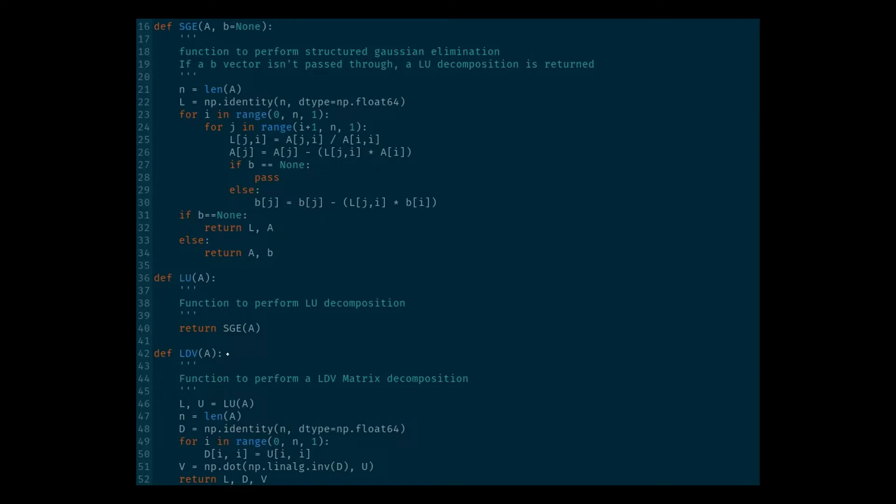Here you can see in line 42, I've defined a new function called LDV. We're passing in an A matrix. The first thing that we're doing, per our steps we just established, is calling the LU function to take advantage of the code we previously wrote. We're setting up our D matrix here, which I'm just using an identity matrix for, since we'll be replacing the values along the diagonal anyways. In lines 49 and 50, we are stripping the values off of the diagonal of the U matrix and placing them on the diagonal of the D matrix.